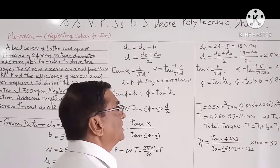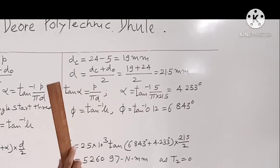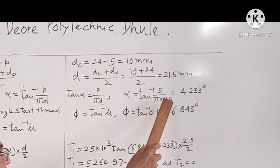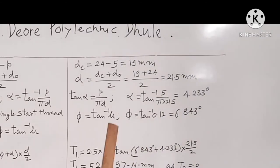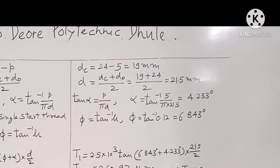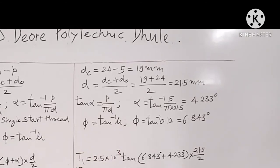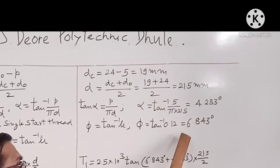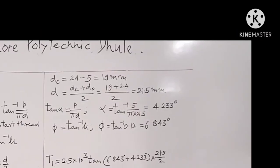Then we will calculate the value of alpha and phi. Tan alpha is equal to P upon pi D. From this formula we will calculate alpha. Alpha is equal to tan inverse P upon pi into 21.5, so alpha comes out to be 4.233 degrees. And after that we will find out the value of phi. From the formula phi is equal to tan inverse mu, putting the value of mu is equal to 0.12, phi comes out to be 6.843 degrees. This is very important step.